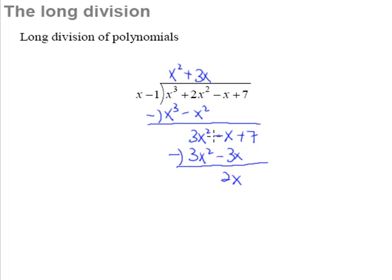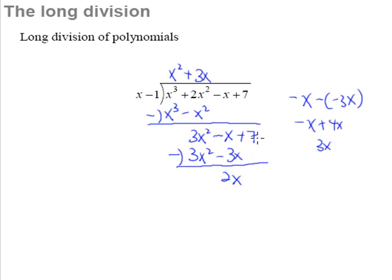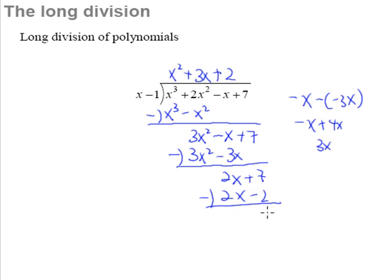It's negative x minus negative 3x — you may want to write it out so it's easier to follow, but hopefully you'll be able to do it mentally. The 7 has nothing to subtract from, so bring down the 7. Something multiplied by x must give positive 2x, so that something is positive 2. Then 2 multiplied by negative 1 gives negative 2. So 2x minus 2x is zero, and 7 minus negative 2 gives 7 plus 2 equals 9.